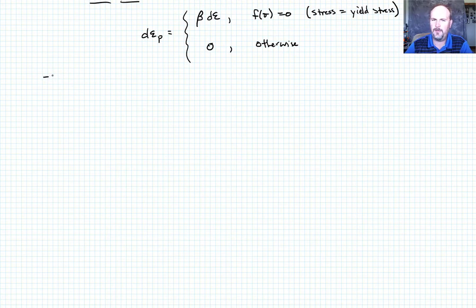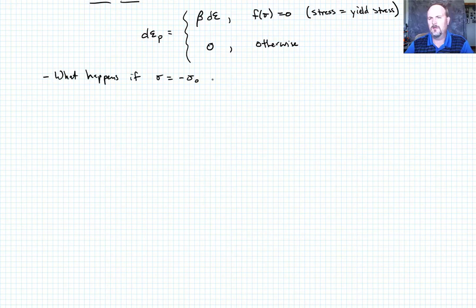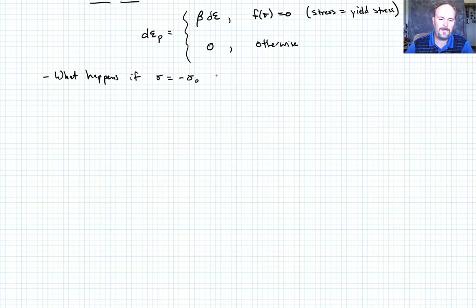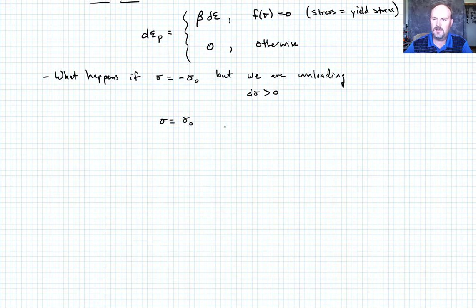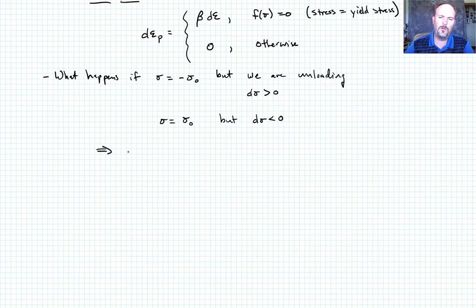A subtlety arises: if sigma equals negative sigma_naught, then f equals zero, suggesting yield. But if we're unloading (d_sigma going toward zero or positive), we shouldn't accumulate plastic strain. Similarly, if sigma equals positive sigma_naught but d_sigma is less than zero (unloading), there should be no plastic strain increment. So the sign of d_sigma matters.